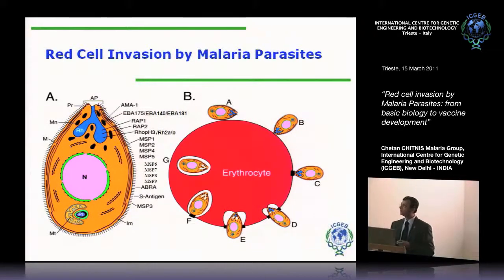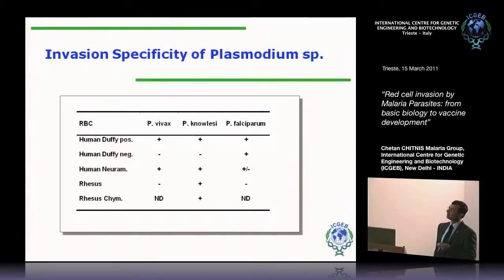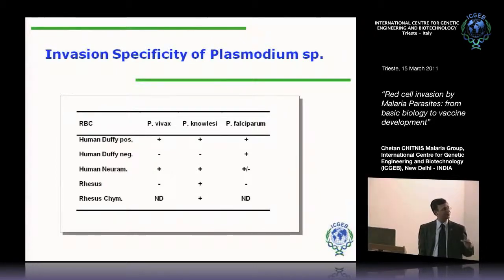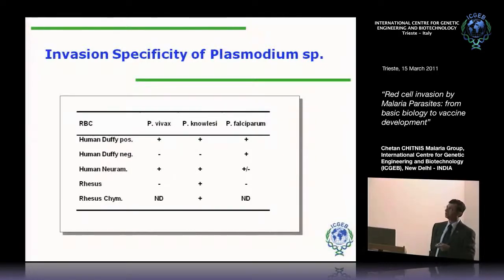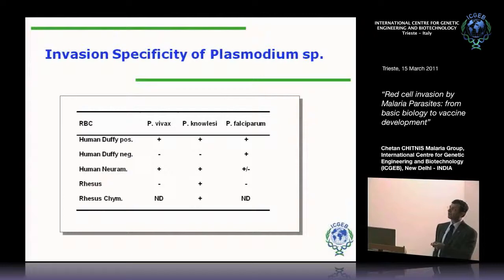The first clues about the receptors came from studies looking at the invasion specificity of different Plasmodium species. It was reported in the 70s — work of Lou Miller at the NIH — that vivax can only invade Duffy-positive human red cells, that is, red cells which have the Duffy blood group antigen on their surface. Duffy-negative red cells, which lack the Duffy antigen, are completely resistant to infection with vivax. Which is why in sub-Saharan Africa, where 95% of the people are Duffy-negative, you don't have any vivax.